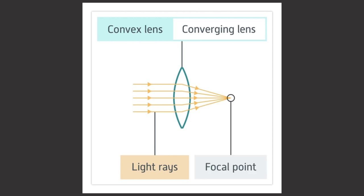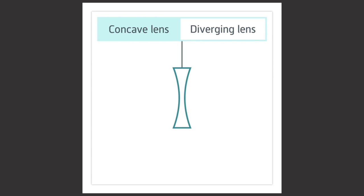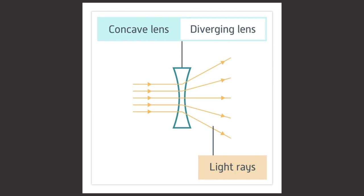They meet at a point called the focal point, marked with an F in diagrams. A concave lens, also known as a diverging lens, is curved inwards on both sides. Light rays passing through it spread apart — they diverge.